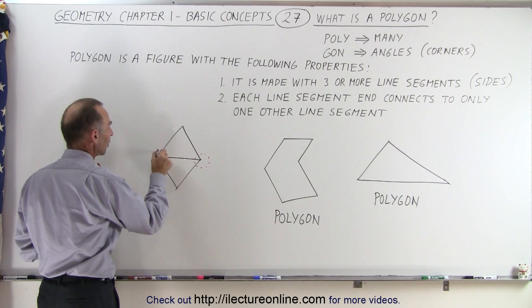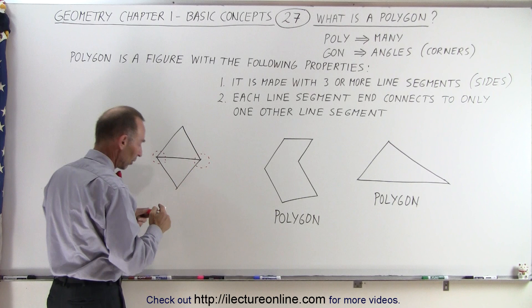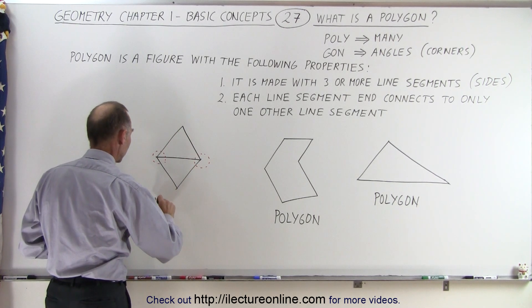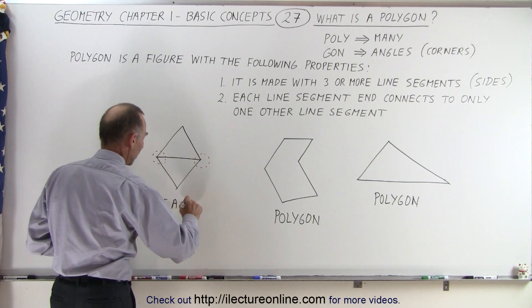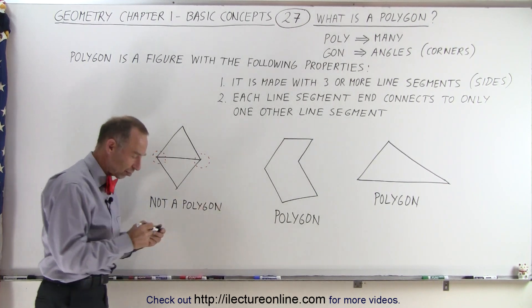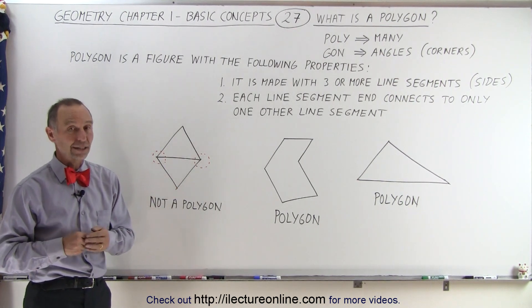And again on this side, you can see that this line segment at the end here connects to two other line segments. So therefore this does not satisfy the condition and we can say that is not a polygon. So strictly by the definition, those two are polygons, but this one is not. And that's how we can tell the difference.